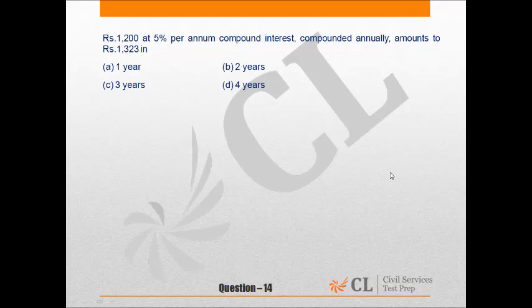Let us look at question number 14. Rupees 1200 at 5% per annum compound interest, compounded annually, amounts to Rupees 1323. In how many years?